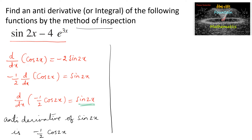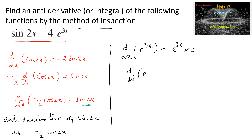For the function 4e to the power 3x, we know that d/dx of e^(3x) is equal to 3e^(3x). We can rewrite this by multiplying and dividing by 4: d/dx of e^(3x) equals 3 by 4 times 4e^(3x).